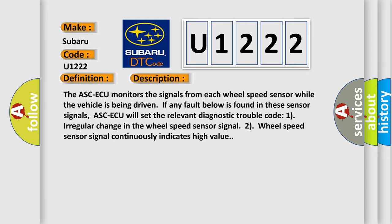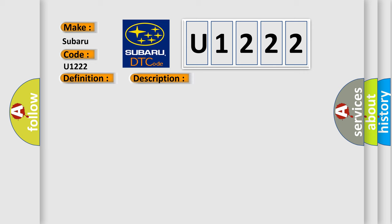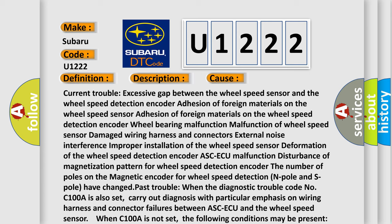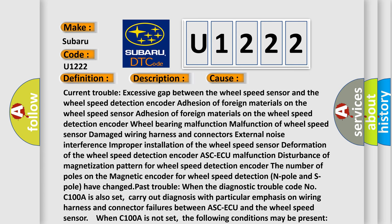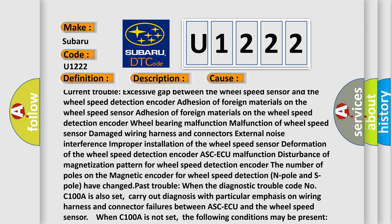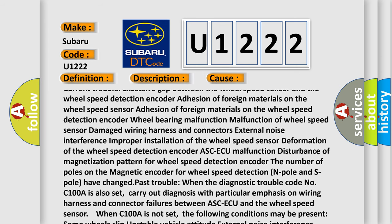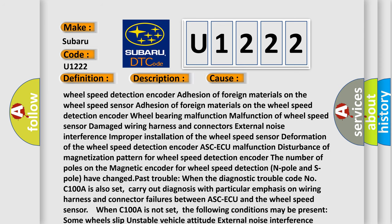This diagnostic error occurs most often in these cases: Current trouble - excessive gap between the wheel speed sensor and the wheel speed detection encoder, adhesion of foreign materials on the wheel speed sensor, adhesion of foreign materials on the wheel speed detection encoder, wheel bearing malfunction, malfunction of wheel speed sensor, damaged wiring harness and connectors, external noise interference, improper installation of the wheel speed sensor, deformation of the wheel speed detection encoder.